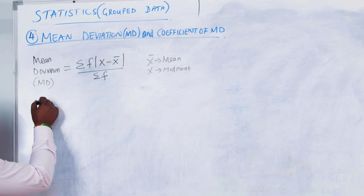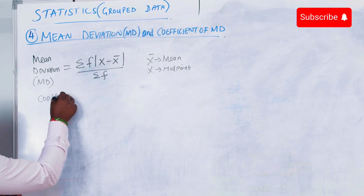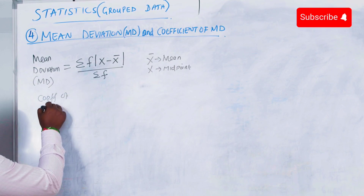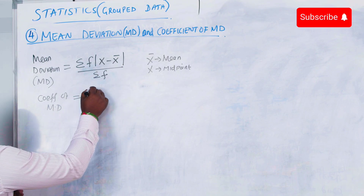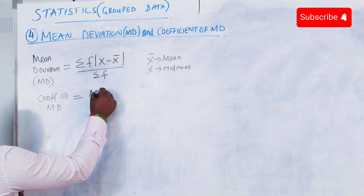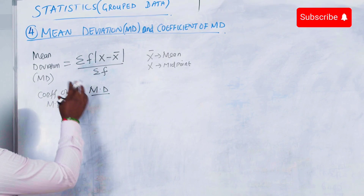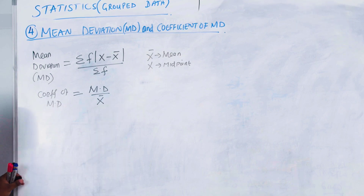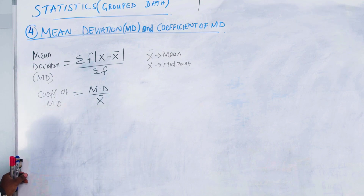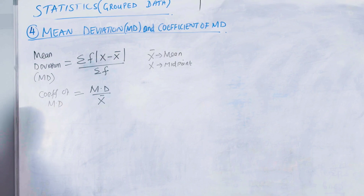The coefficient of mean deviation will just be our mean deviation divided by our mean. So that one doesn't have a problem. We can create our own example.